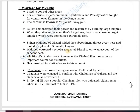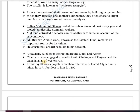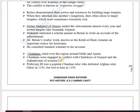Muhammad Ghazni entrusted a scholar named Al-Biruni to write about his victories in the subcontinent. Al-Biruni wrote the book Kitab-ul-Hind in Arabic, consulting Sanskrit scholars to compile his account. This is significant because Al-Biruni did not know Sanskrit and took help from Sanskrit writers to record the history of India. Another important ruler is the Chahamanas, who ruled the region around Delhi and Ajmer, and were engaged in conflict with the Chalukyas of Gujarat and the Gahadavalas of western UP.